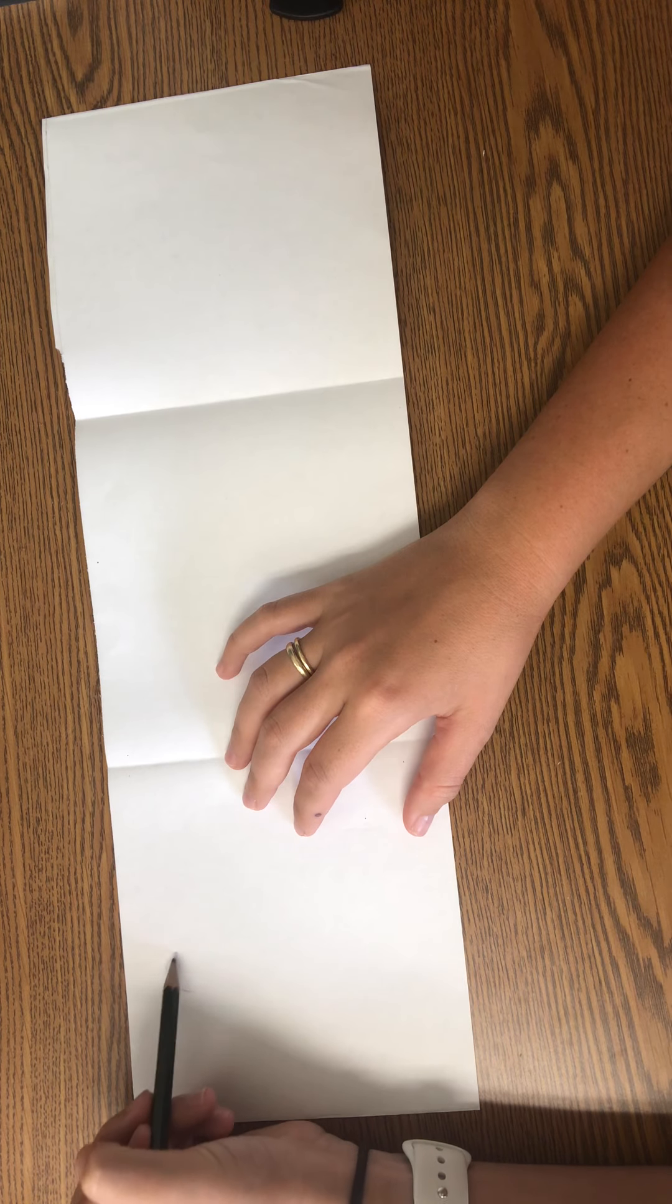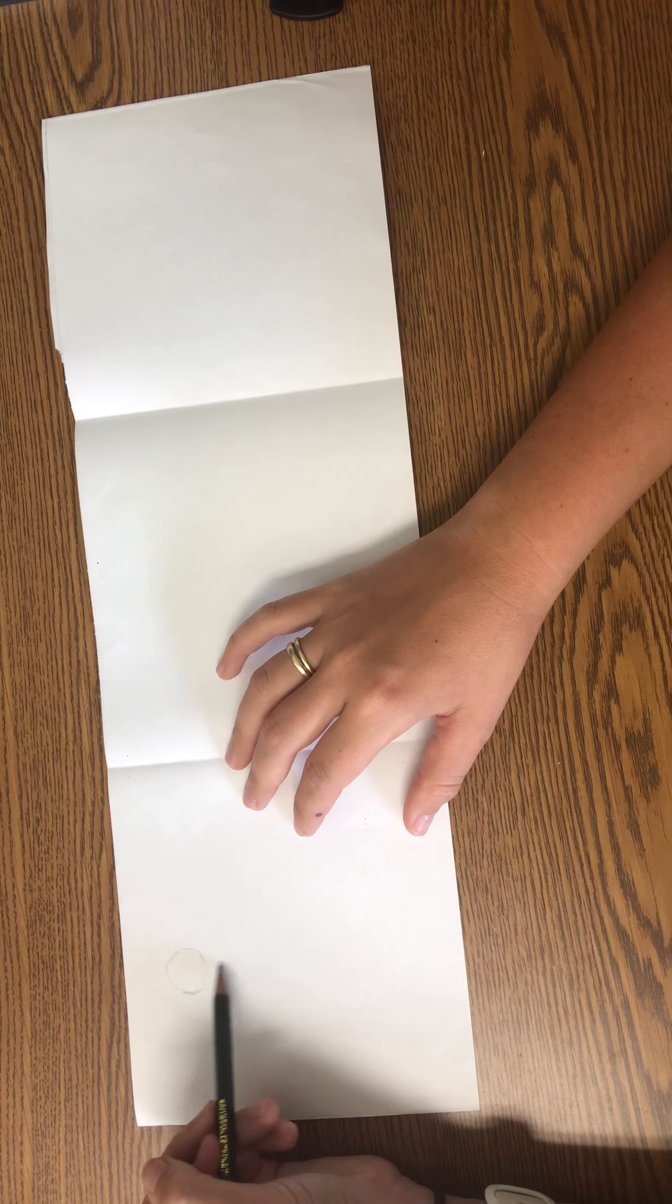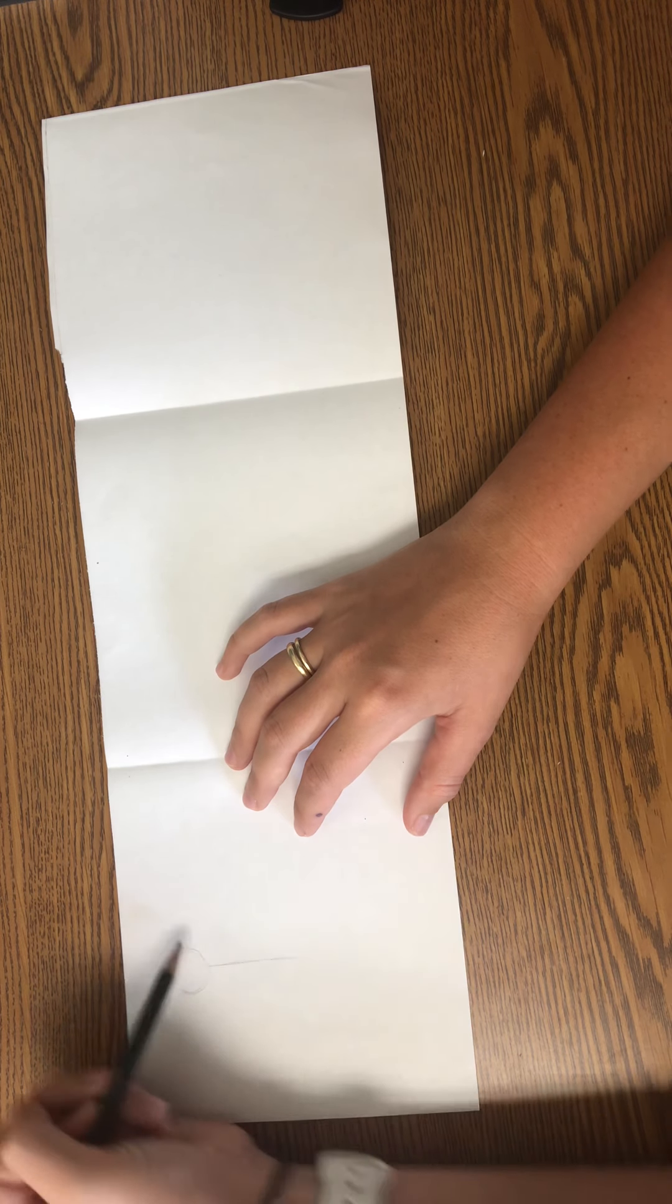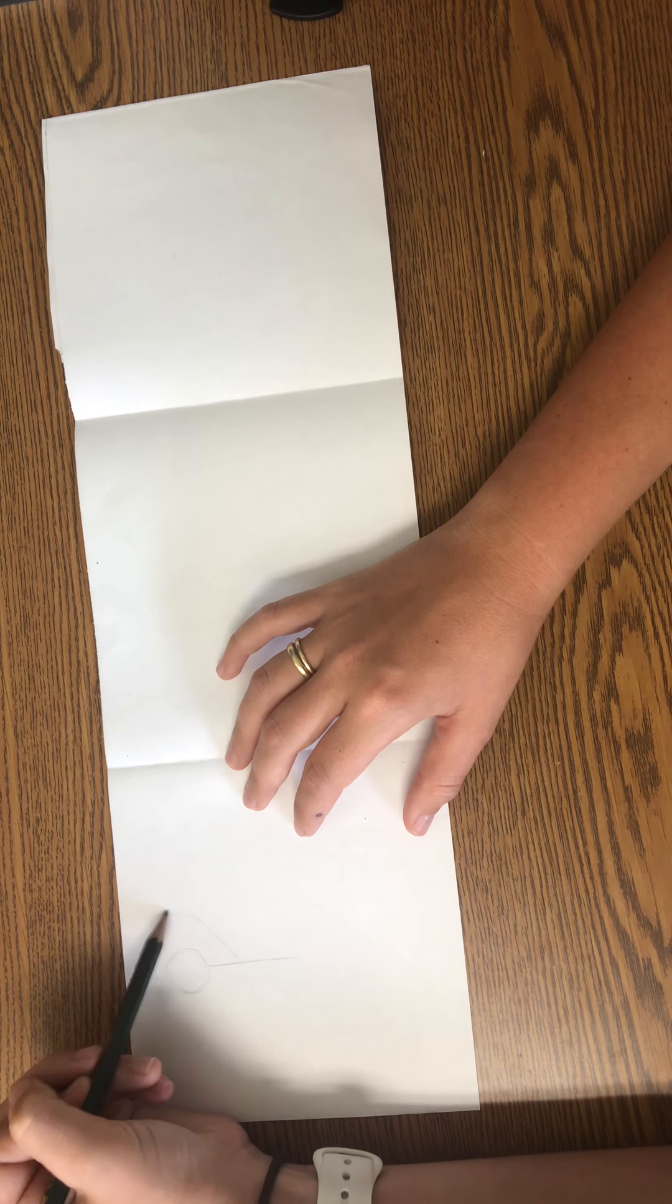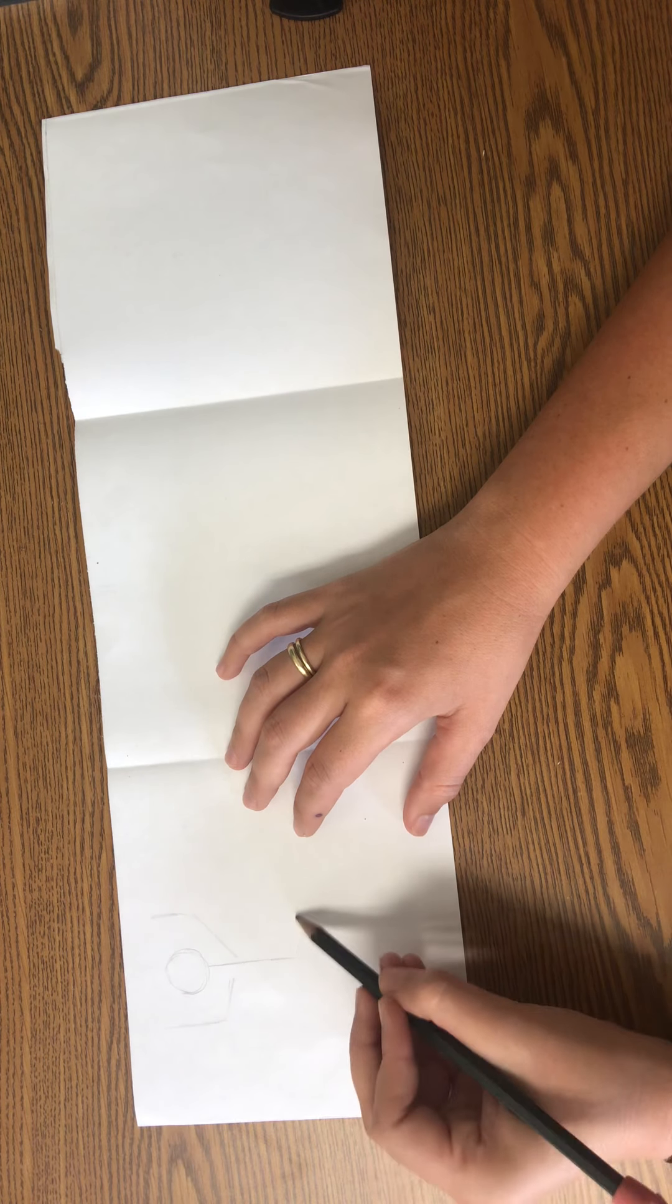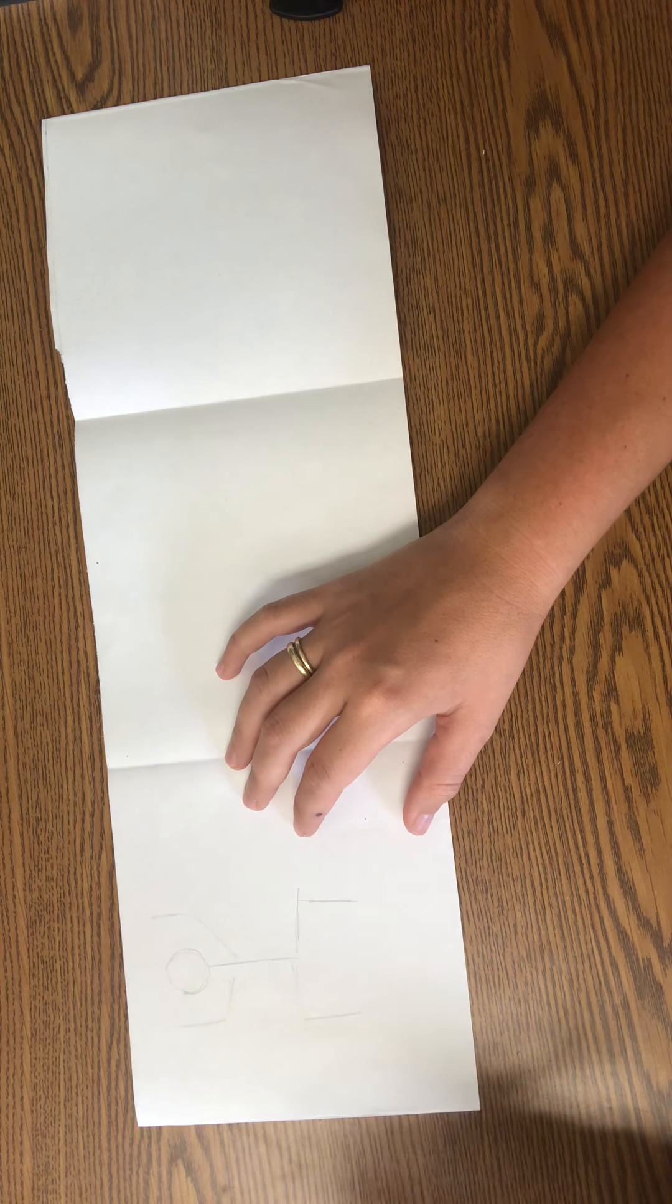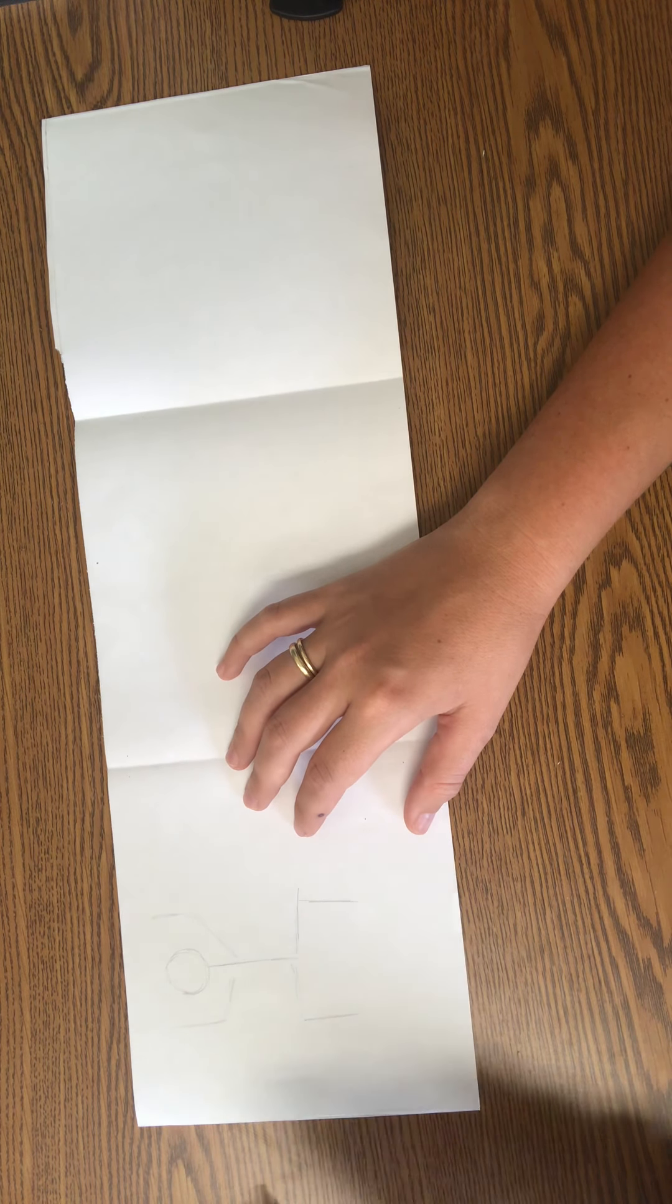I would start with my head and you can make your stick figure in whatever position you want your Keith Haring person to be in. So of course you need to also look at a Keith Haring figure so you know how to do this.